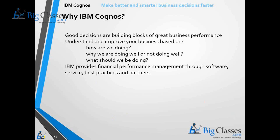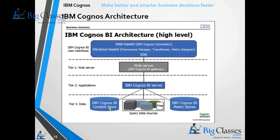Now let us see about Cognos architecture. It is actually a 3-tier architecture. The base tier is where data resides — that is tier 3. The second tier is the application server, and the first tier is the web server. Through the web server, Cognos users reach the Cognos BI server, which then queries the data in the backend.